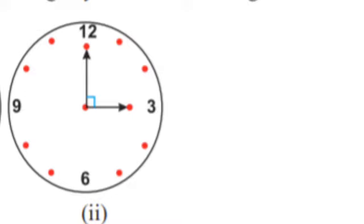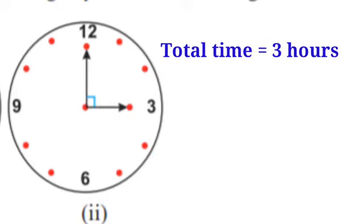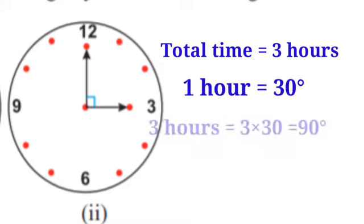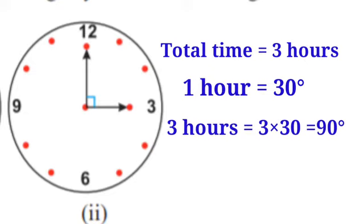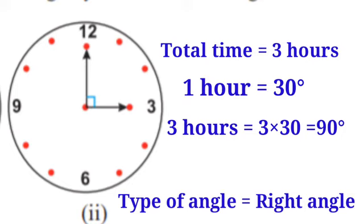Second clock — the long hand is at 12 and the short hand is at 3. The time period is 3 hours. 3 × 30 = 90 degrees. 90 degrees represents a right angle, so the type of angle is right angle.